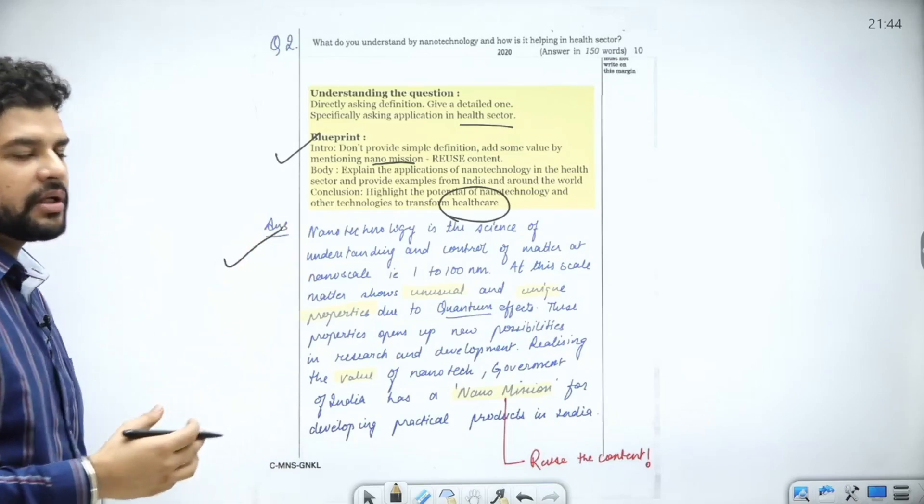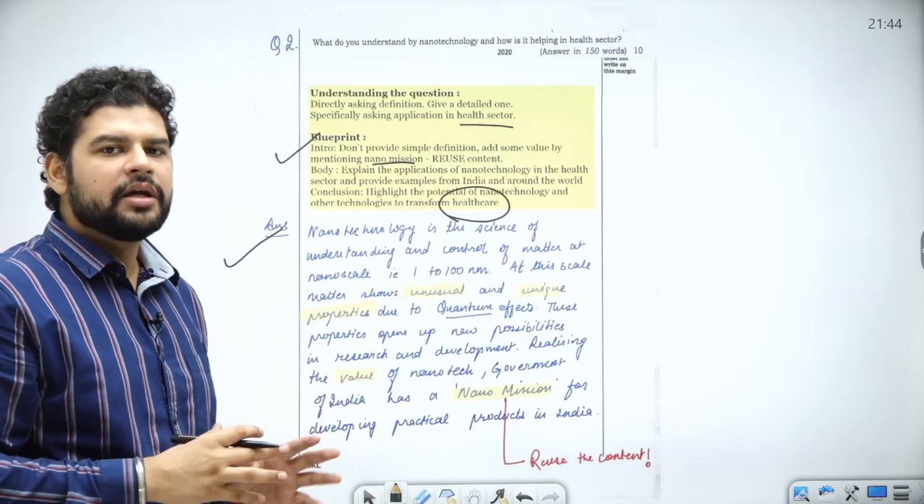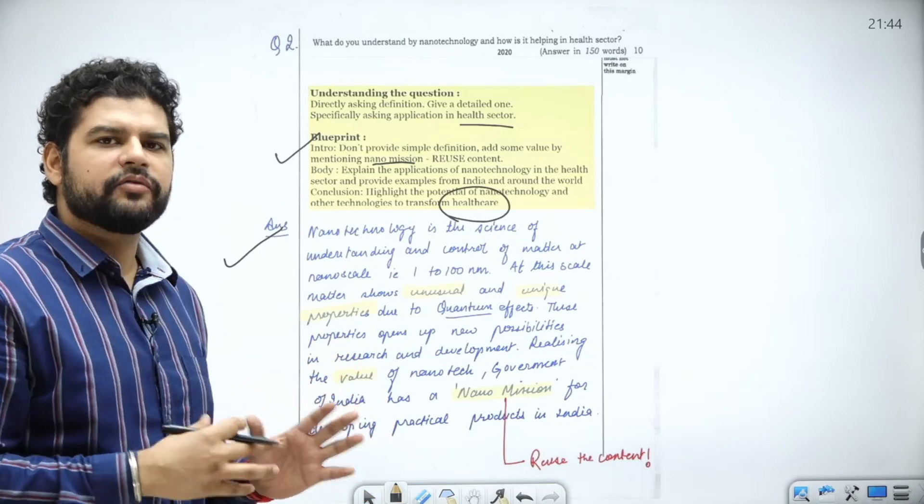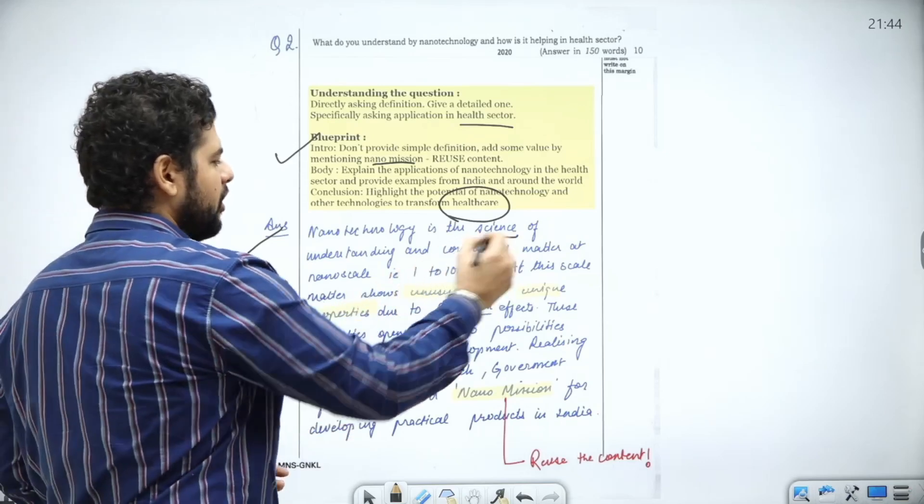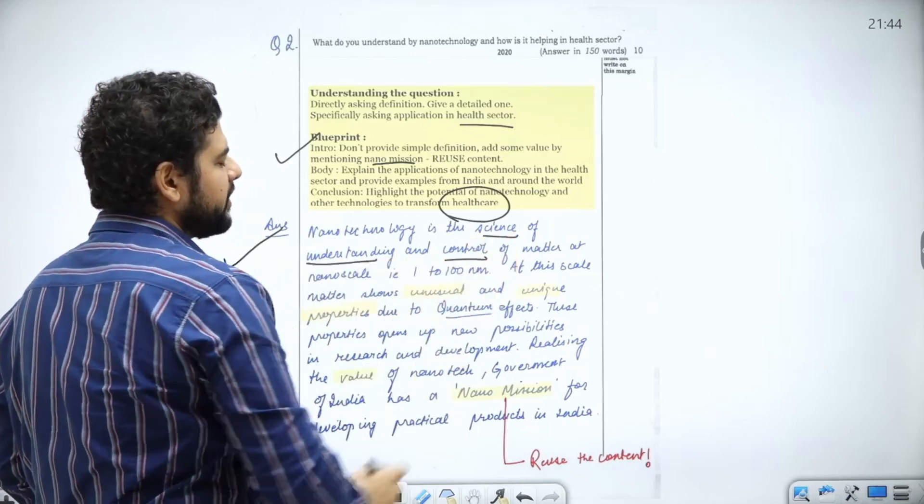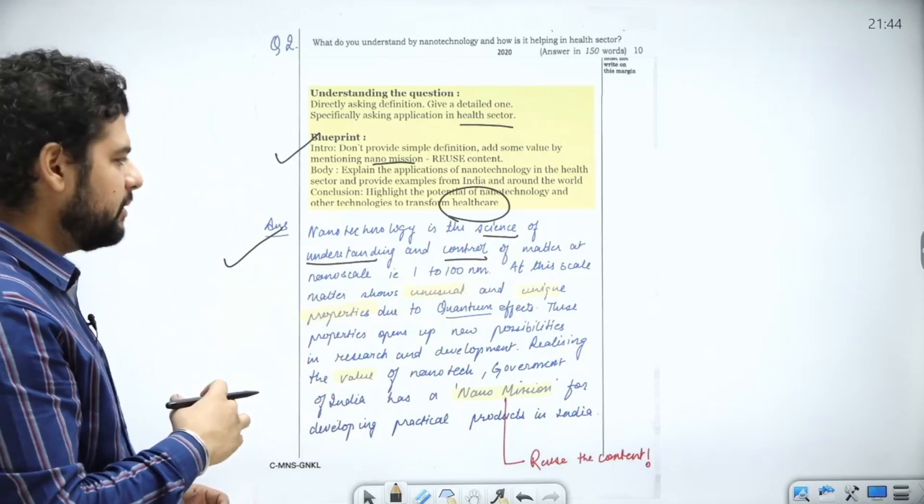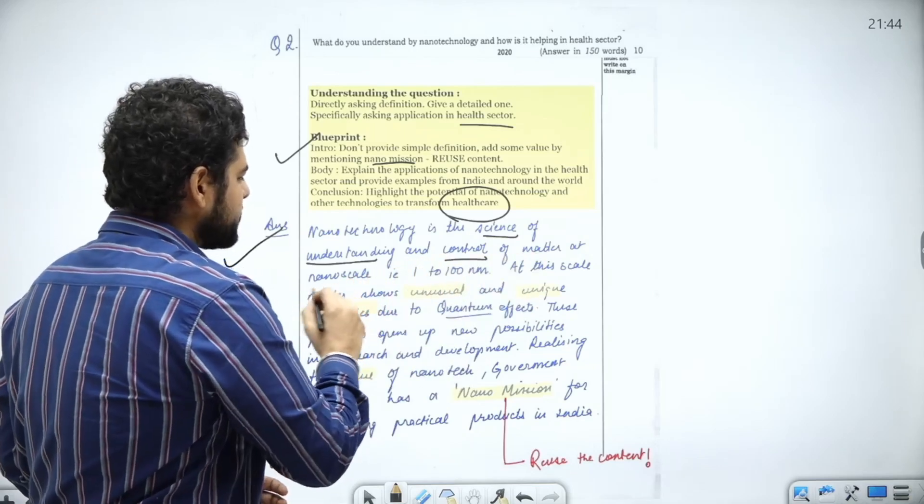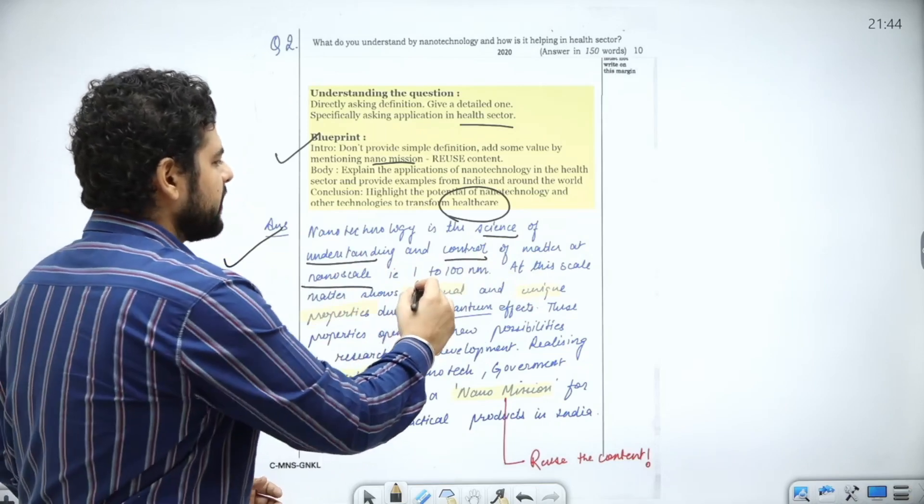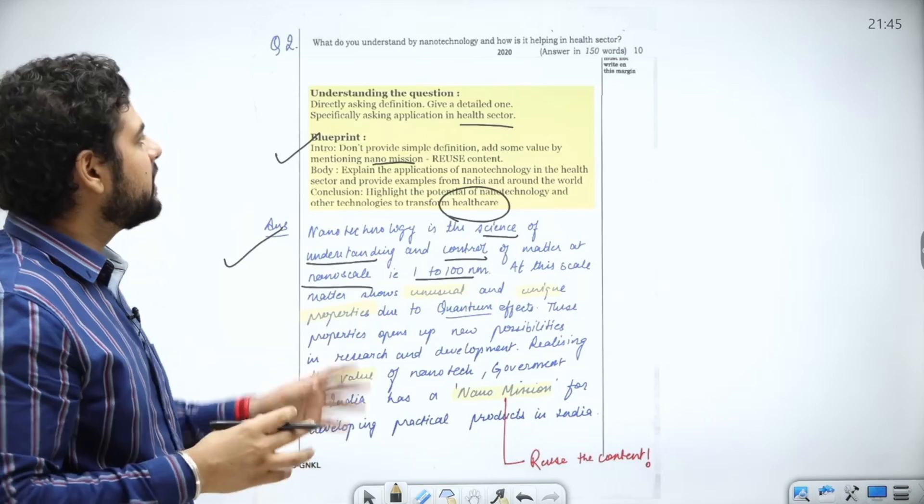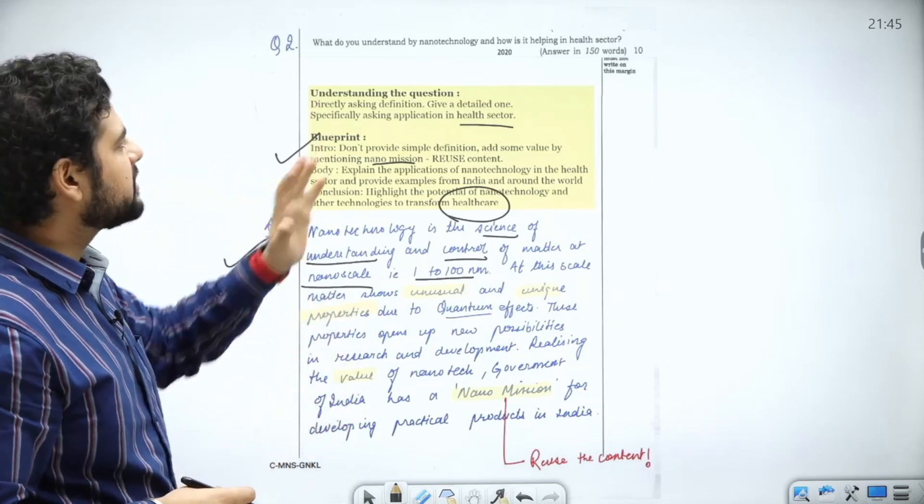First we'll see the introduction. In the first question of this theme, I've already discussed the definition, but again the same thing is written over here for your benefit. See, nanotechnology is the science of understanding and control of the matter. I have used different keywords from the first question. Now control of matter at the nanoscale, 1 to 200 nanometers, a detailed definition is written because it is being asked directly.